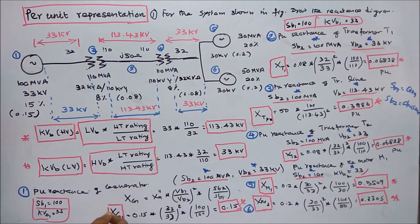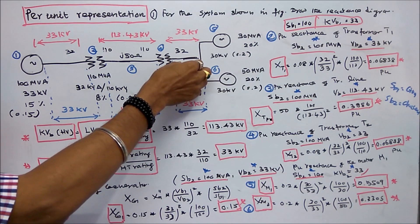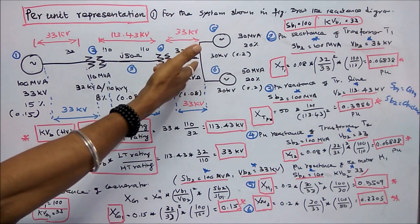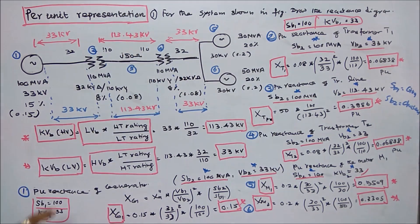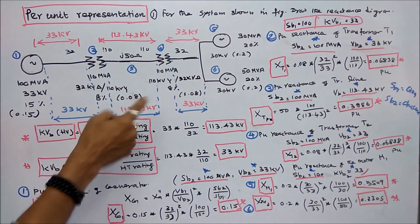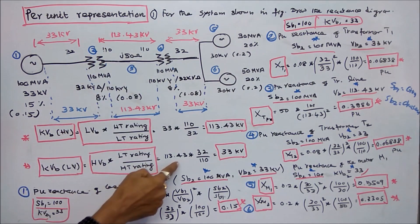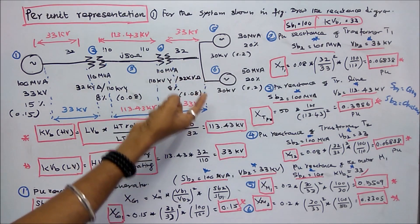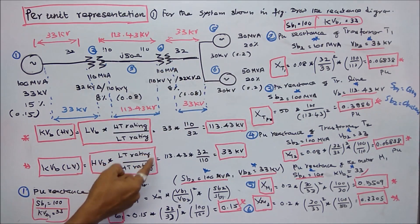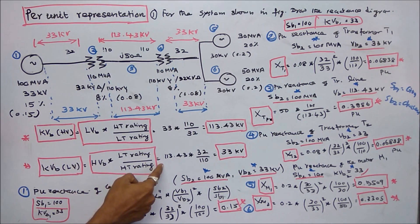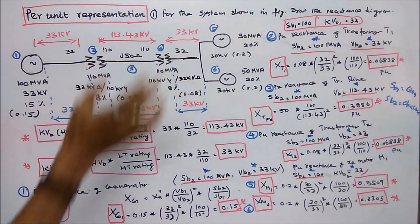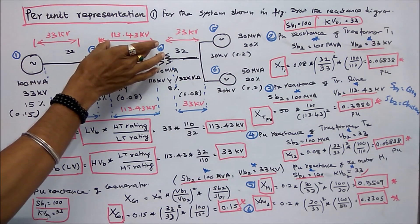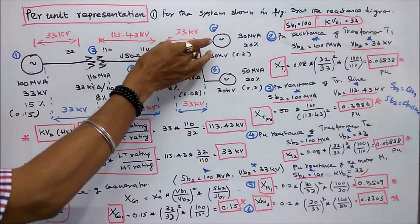We also find the base voltage on the low voltage side of the second transformer. Low voltage base kV equals high voltage base 113.43 kV into LT rating 32, divided by HT rating 110. That equals 113.43 into 32 by 110, which is 33 kV. So the voltage levels are: 33 kV, 113.43 kV, and 33 kV.